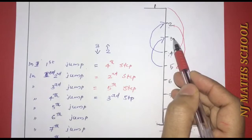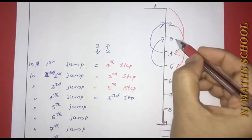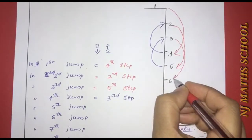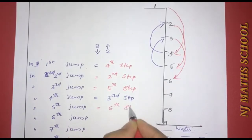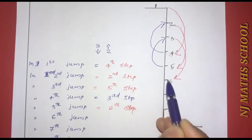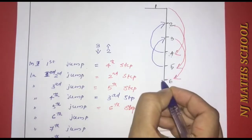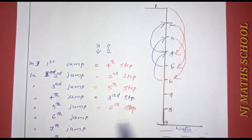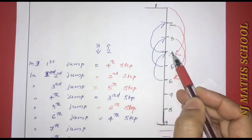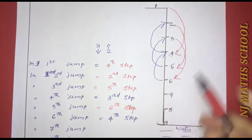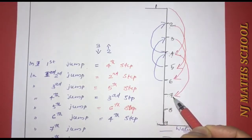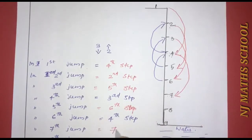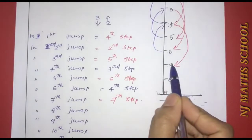Now we will take three steps — one, two, three — that is the sixth step. We will take the fifth step. Then two steps back — one, two — we will be at the fourth step. Next, three steps down — one, two, three — we will be at the seventh step.